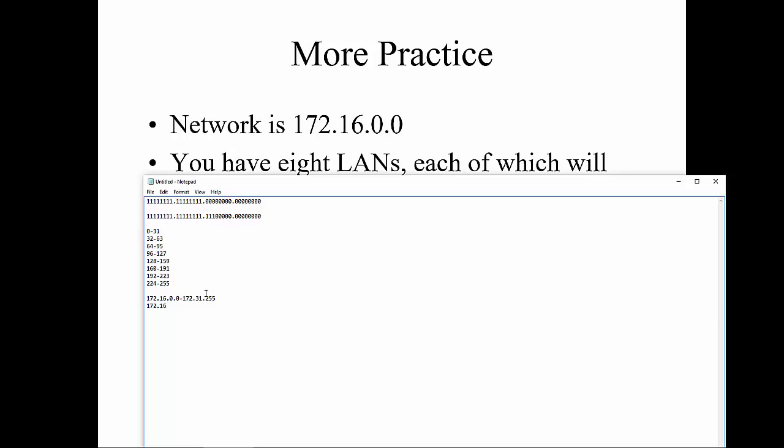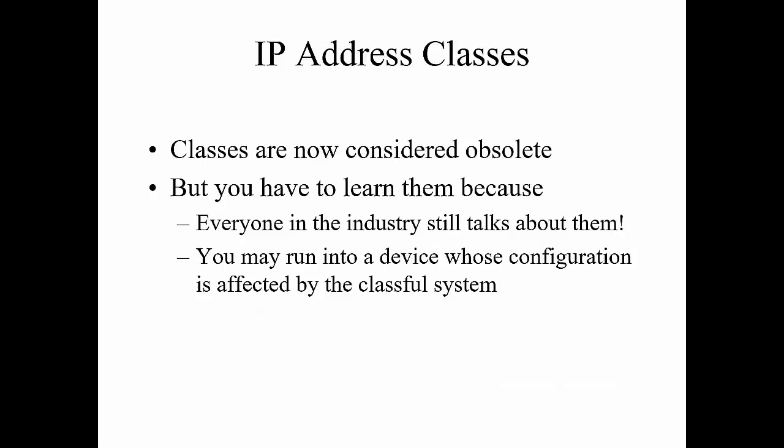Let's talk about IP classes. IP classes were considered obsolete because they predefined the subnetwork, and that doesn't really work. Sadly, you have to know them because most people in the industry still talk about them, and sometimes you may run into classful address schemes for businesses. Class A: if the first octet starts with any number between 1 and 127, it's class A — normally used for very large networks. Class B is between 128 and 191 in the first octet — for large networks. Class C is anywhere between 192 and 223, for smaller networks.